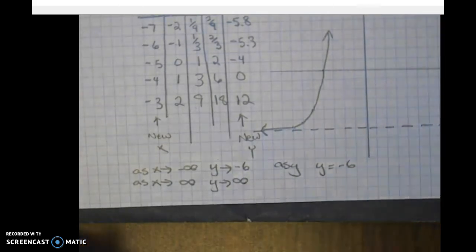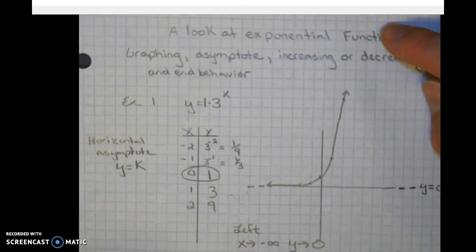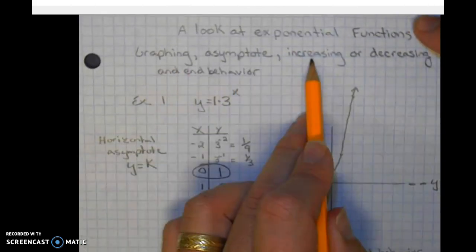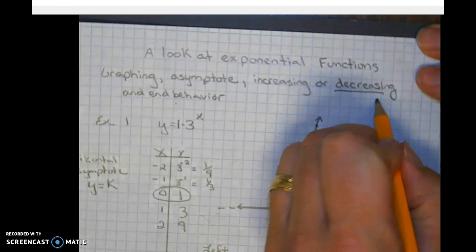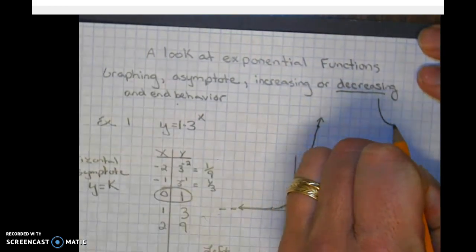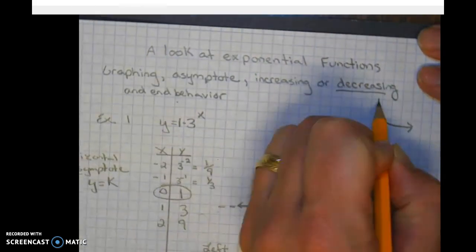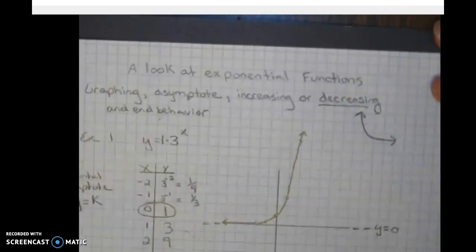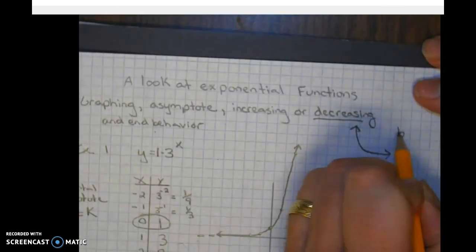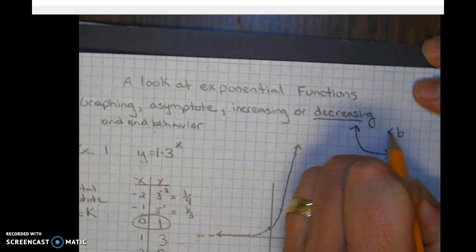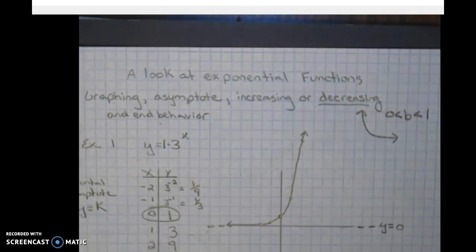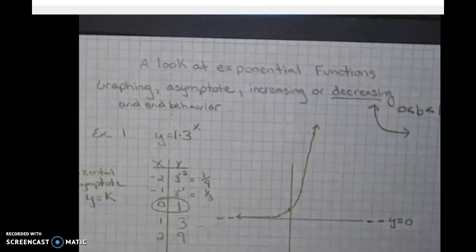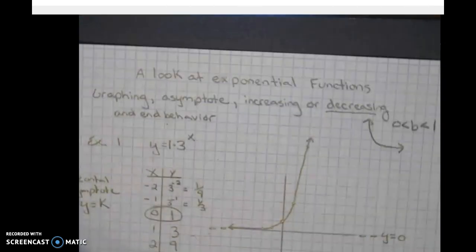And I believe I have covered everything. Graphing, asymptote, increasing or decreasing, and end behavior. We didn't see any decreasing. But a decreasing function is going to, we've covered this already, look like that. And remember the base is going to be greater than zero, but less than one in the equation. Hope you all are having a great night. Come tomorrow prepared with your questions.